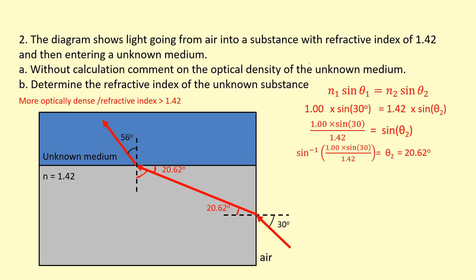Therefore, 90 minus 20.62 gives us the complementary angle. Using the right angle triangle: 90 minus 20.62 gives 69.38. Then, using the fact that angles in a triangle add up to 180, subtracting 69.38 and 90 degrees gives 20.62. And repeating the process of 90 minus 20.62, we get 69.38 as the angle of incidence at the second boundary.